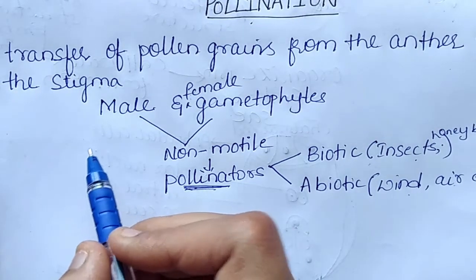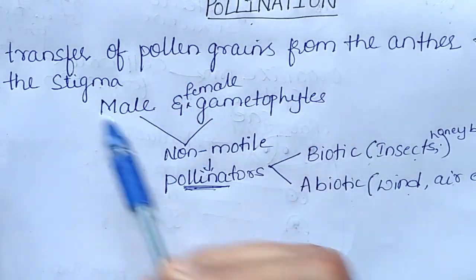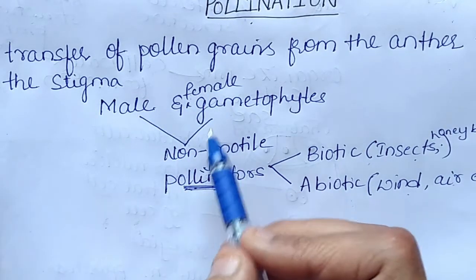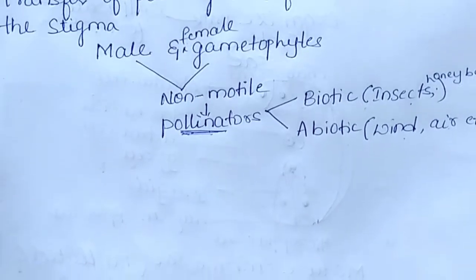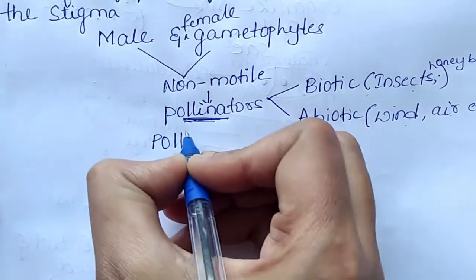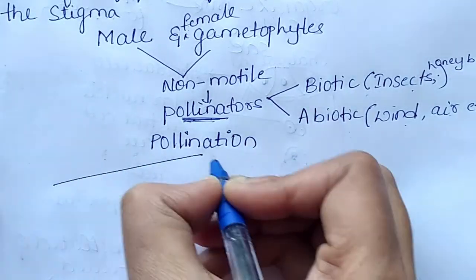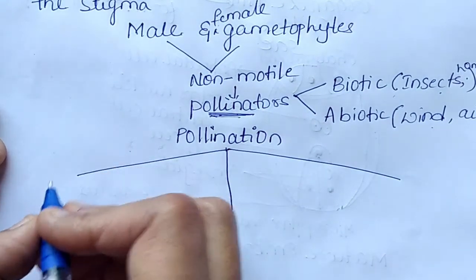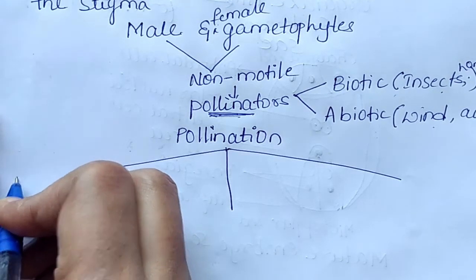Pollination is nothing but transfer of pollen grains from anther to the stigma. We also studied that male and female gametophytes are non-motile. Pollination is classified into three main types: autogamy, geitonogamy, and xenogamy.